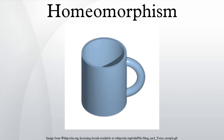Roughly speaking, a topological space is a geometric object, and the homeomorphism is a continuous stretching and bending of the object into a new shape.